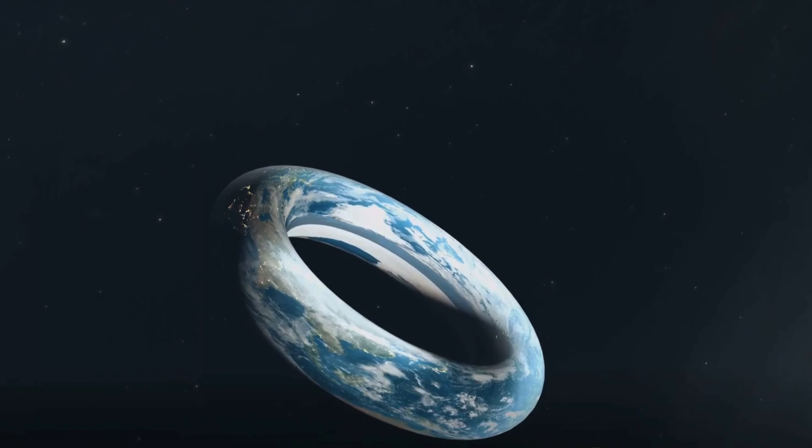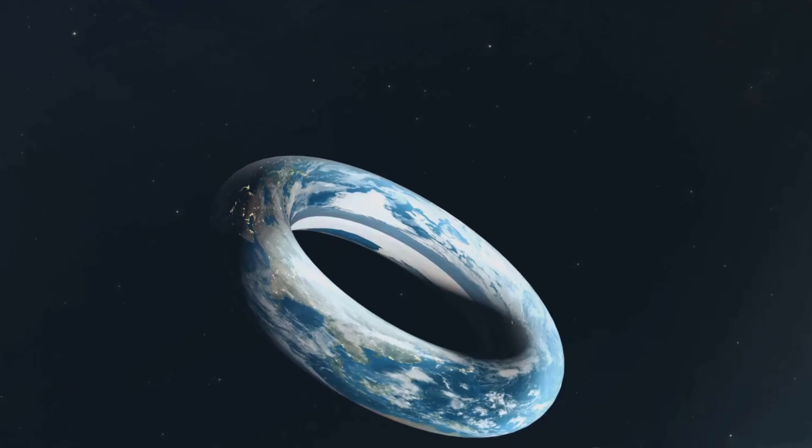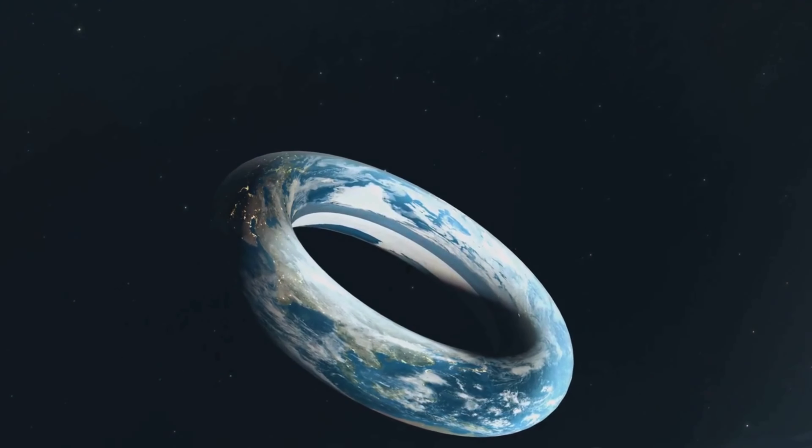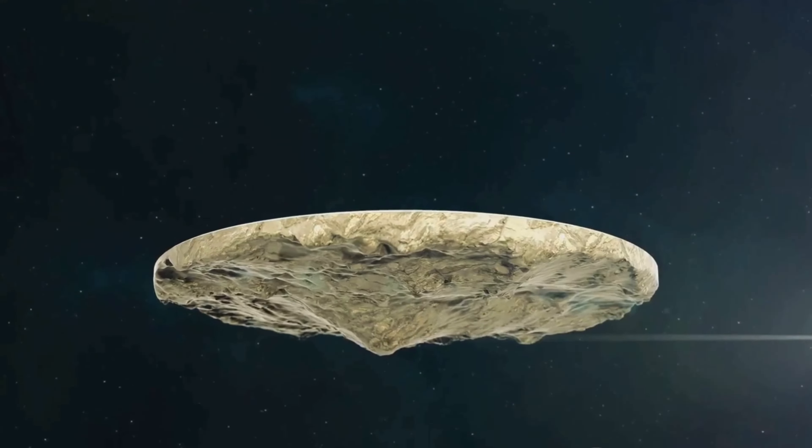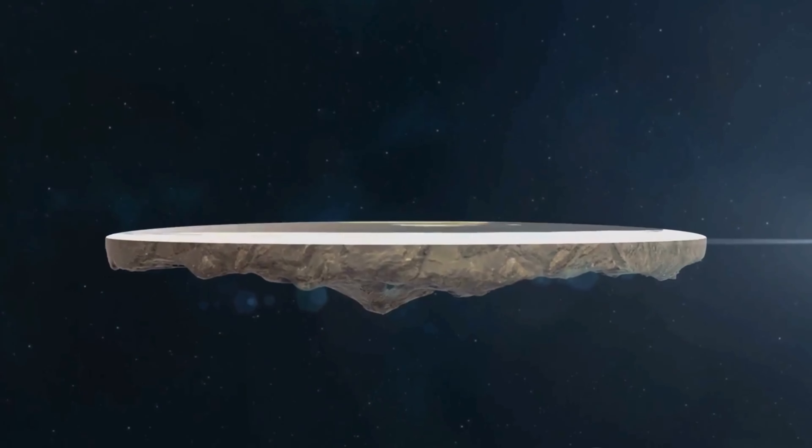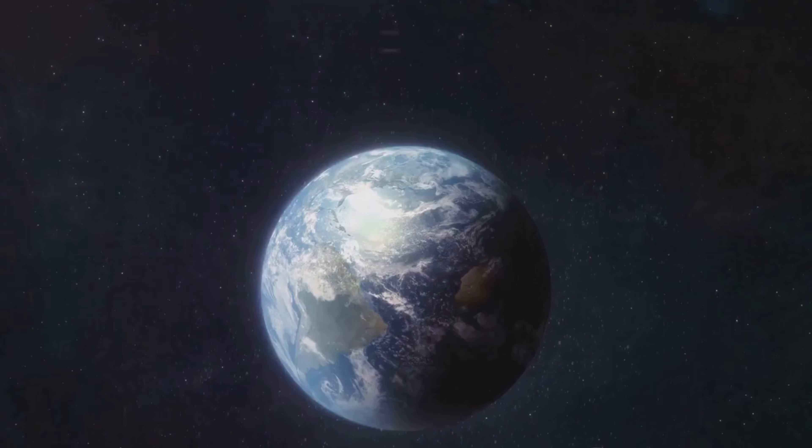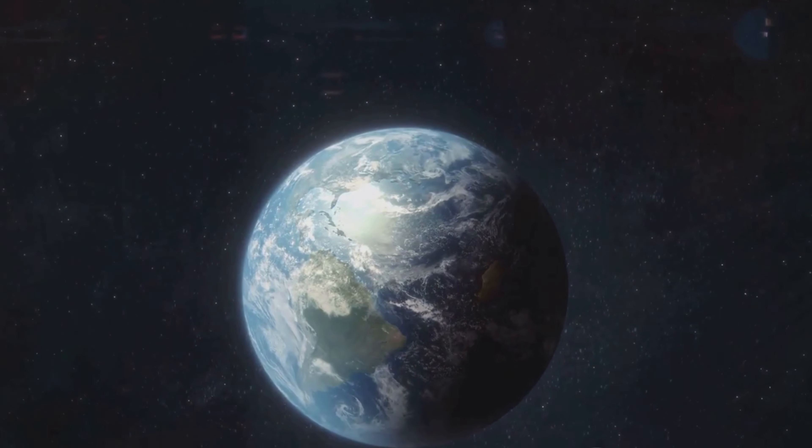Ever pondered on the unusual notion of Earth, our home, being shaped differently? Picture this: our planet not as the familiar blue sphere we know and love, but as something entirely different. Imagine Earth molded into shapes as curious as a donut, as peculiar as a dumbbell, or as controversial as a flat disc. Such a twist would be far from trivial, for the shape of Earth is the cornerstone of life as we know it.